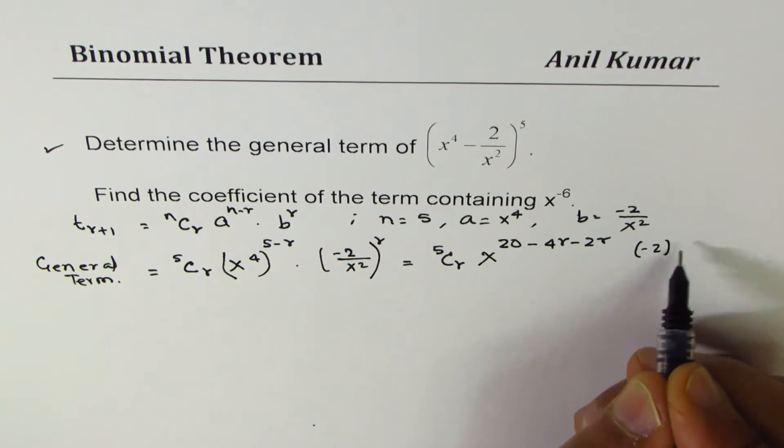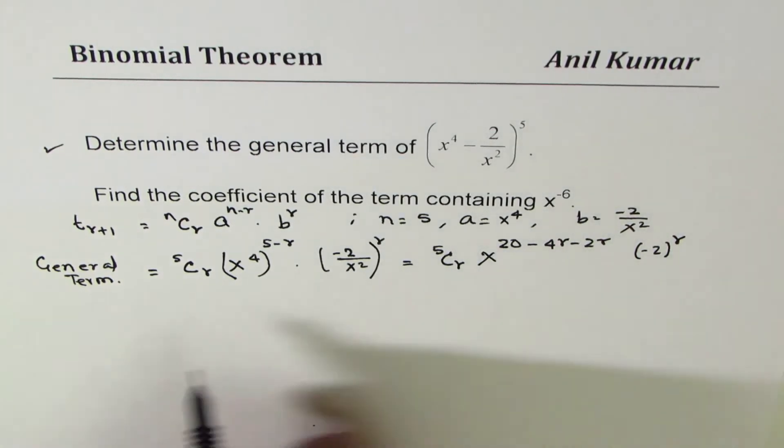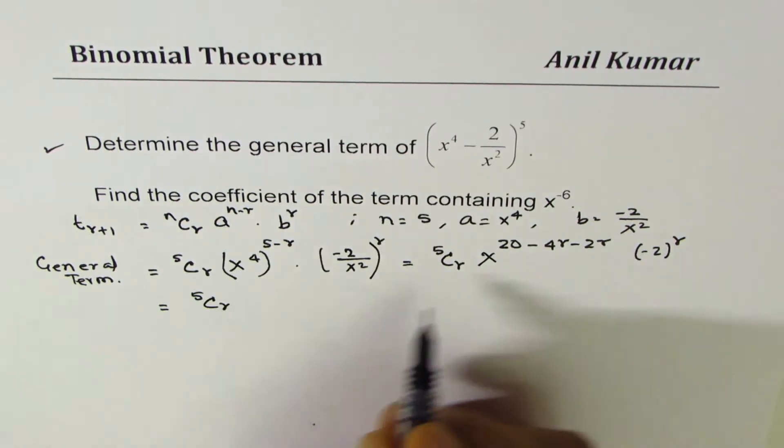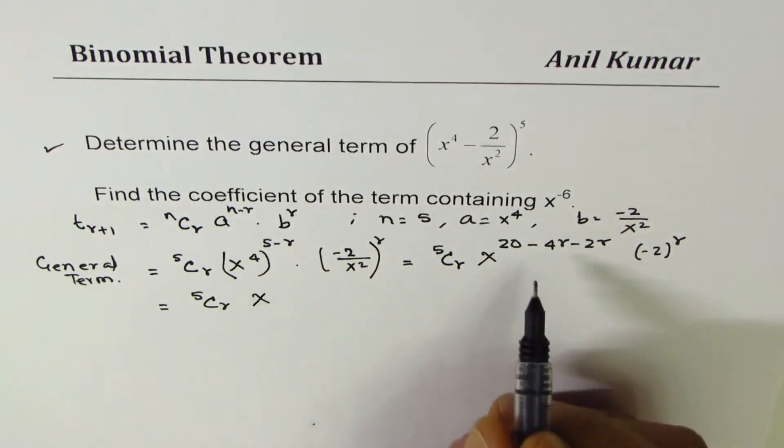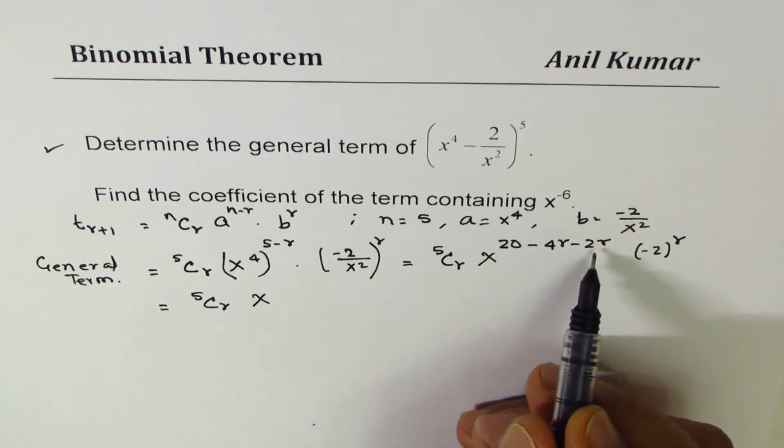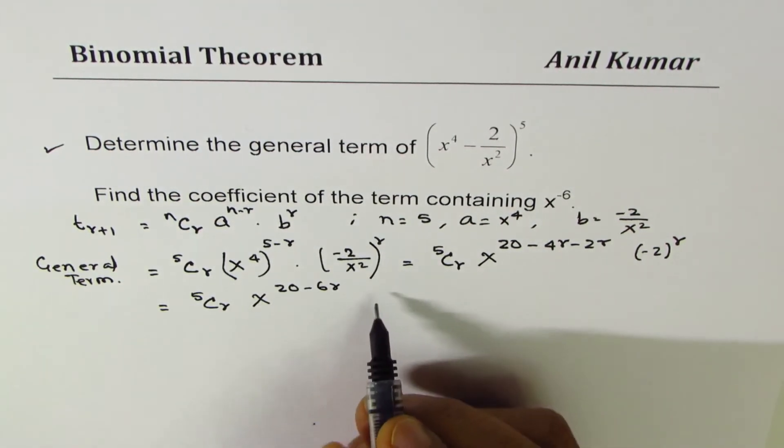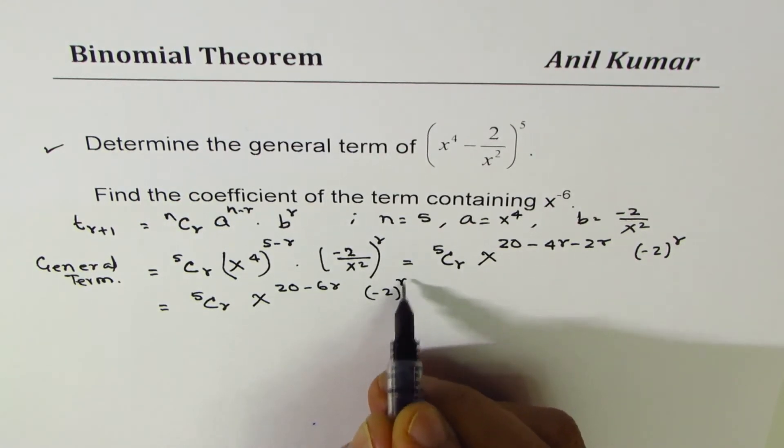And we have (-2)^r. So let me simplify this and then rewrite the general term as 5Cr x^(20-6r) times (-2)^r.